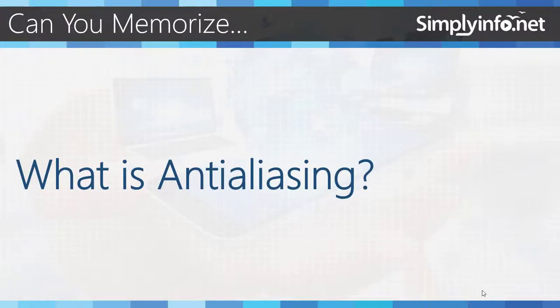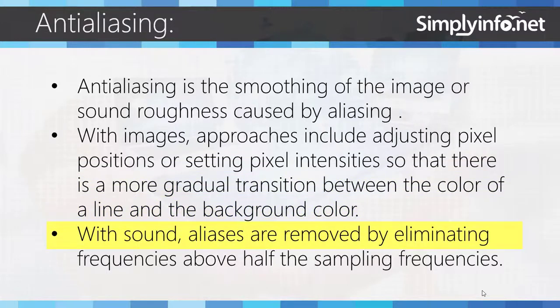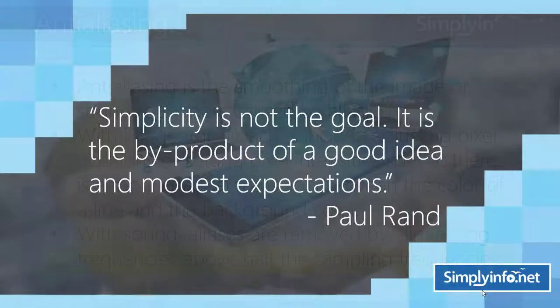So can you memorize what is anti-aliasing? Anti-aliasing is the smoothening of the image or sound roughness caused by aliasing. With images, approaches include adjusting pixel positions or setting pixel intensity so that there is a more gradual transition between the color of a line and the background color. With sound, aliases are removed by eliminating frequencies above half the sampling frequency.